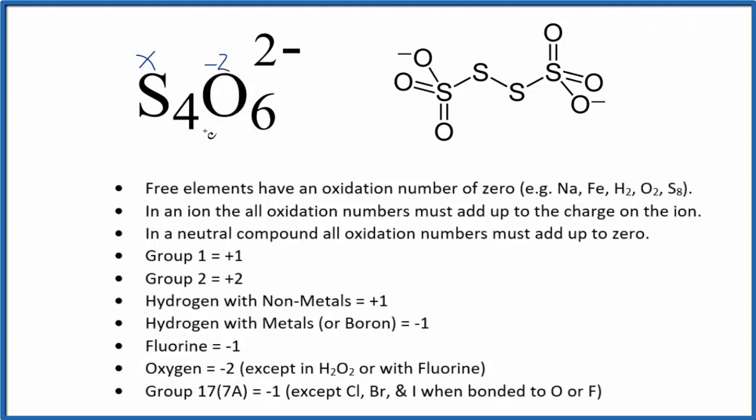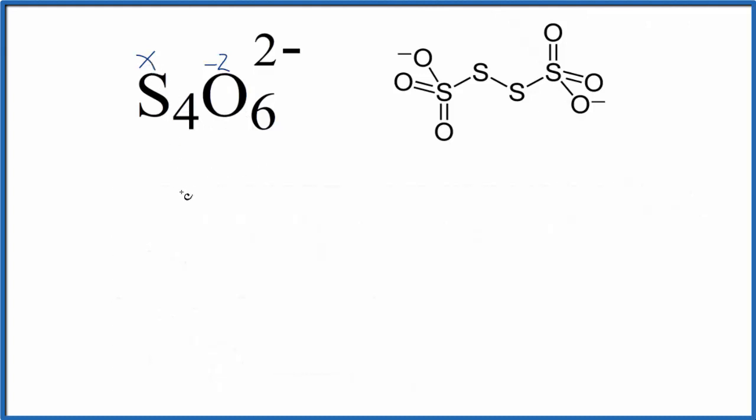Let's set up an equation to figure out the average oxidation number for the sulfur. We're going to call sulfur X, and we have four of them. So 4X, we have minus two for the oxygen, but we have six of those. And the whole thing equals the charge on the ion, minus two.